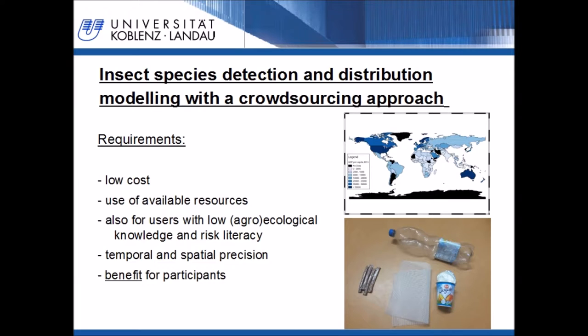Also, the method must create data and decision support with a not too low quality of information, to avoid wrong or suboptimal decisions with a disadvantageous effect for the farmers. And perhaps the most important point: the described method requires the active participation of farmers. Past research showed that participation goes along with a benefit for the participants. Therefore, the participation of the farmers must lead to a benefit for them.